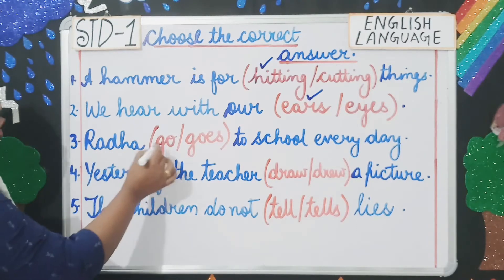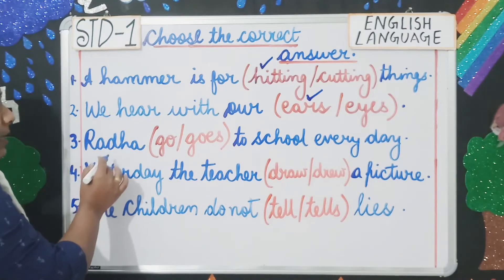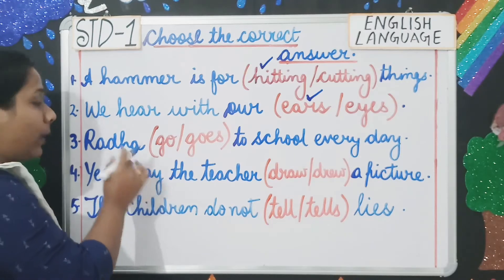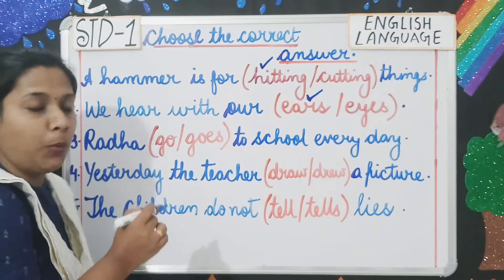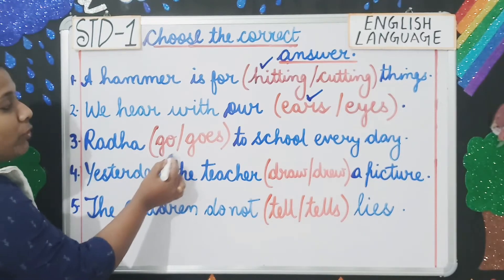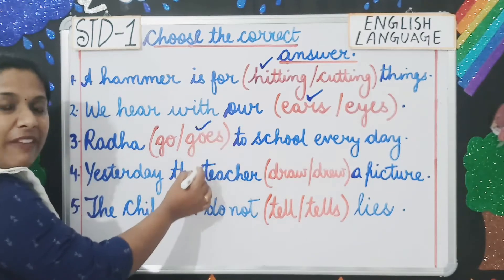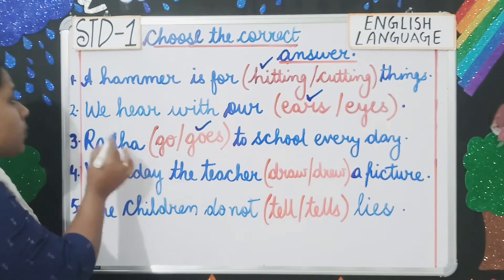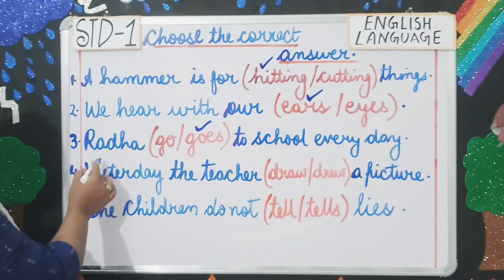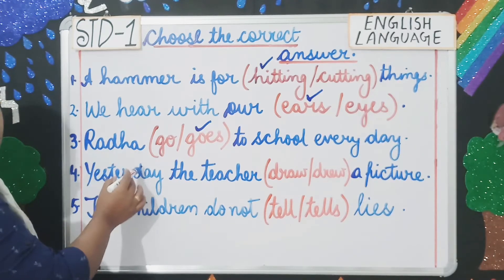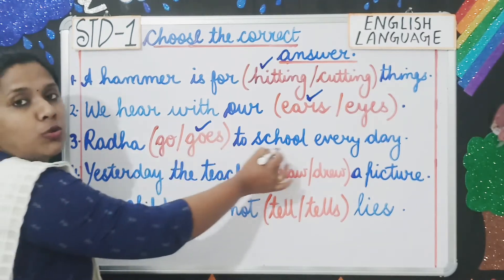Number three: 'Radha go / goes to school every day.' Radha is singular, and with third person singular we add 's' or 'es' to the verb. So we choose 'goes.' If it were 'the children,' children is plural, and we would use 'go' — 'The children go to school every day.'